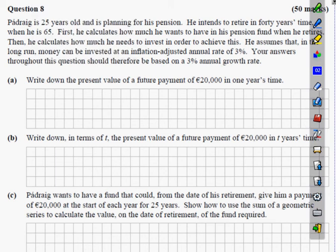Okay guys, Padraig is 25 years old and planning for his pension. He intends to retire in 40 years time when he's 65. Once again, information we're not going to use apart from maybe the 40 years time. First he calculates how much he wants to have in his pension fund when he retires. Then he calculates how much he needs to invest in order to achieve this. He assumes that in the long run money can be invested at an inflation-adjusted annual rate of 3%. Your answers to this question should therefore be based on a 3% annual growth rate.